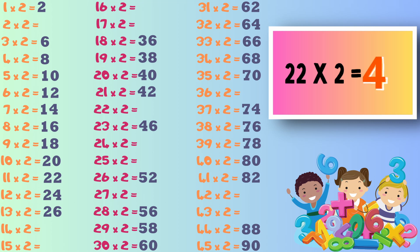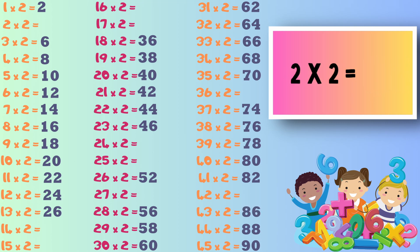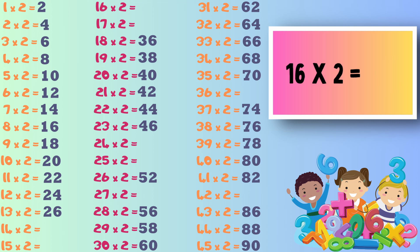Now we have 43 times 2, the answer to this one is 86. And all the twos again — 2 times 2, this one equals 4. Next it's 16 times 2, the answer to this one is 32.